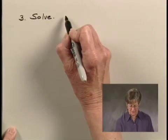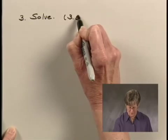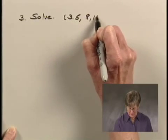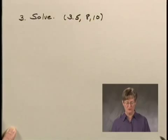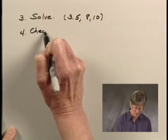The next thing we would do is solve this system of equations. I'm not going to take you through the whole solution, but when we do solve it, the solution we get is the ordered triple (3.5, 8, 10), and we need to check this possible solution in the original problem. It's the fourth step in our process.